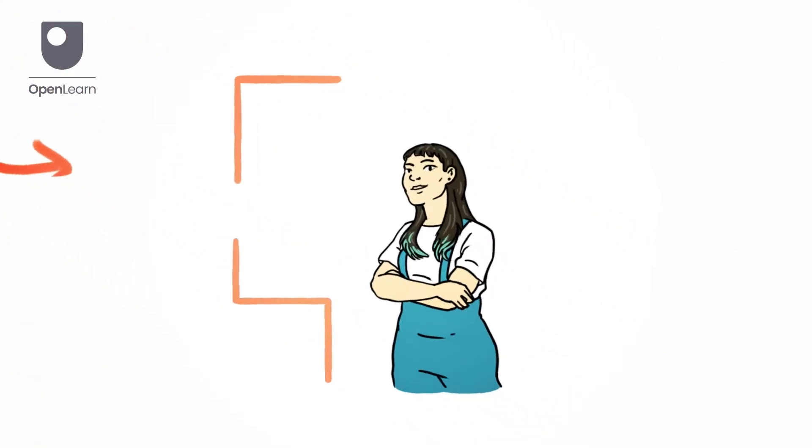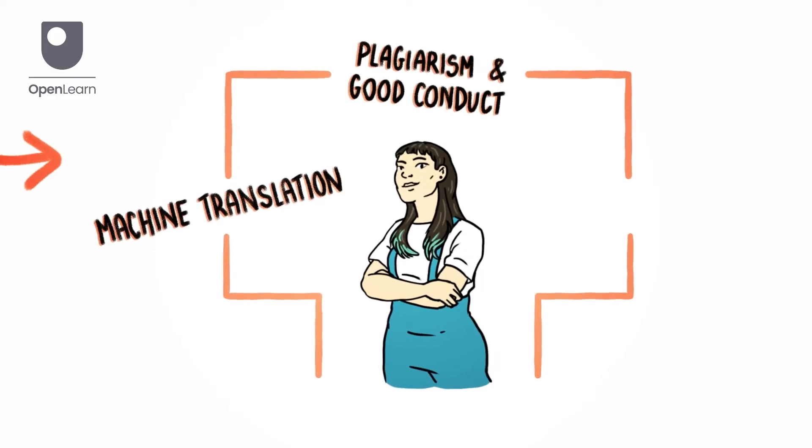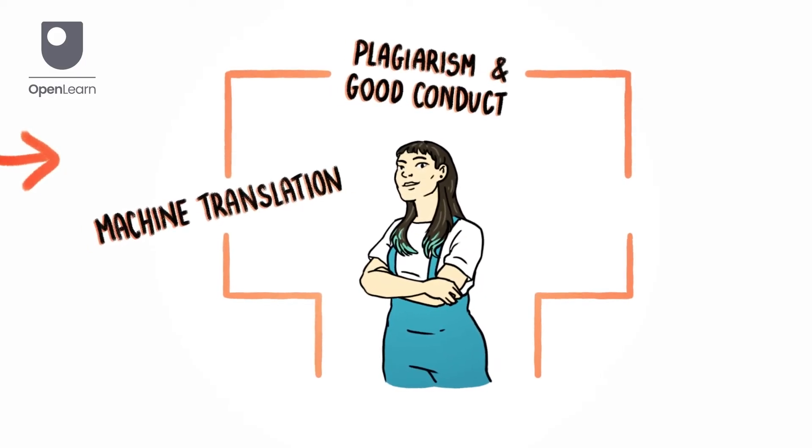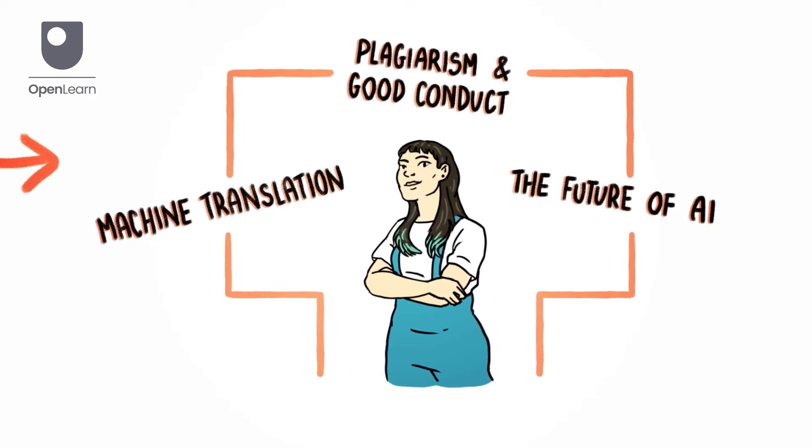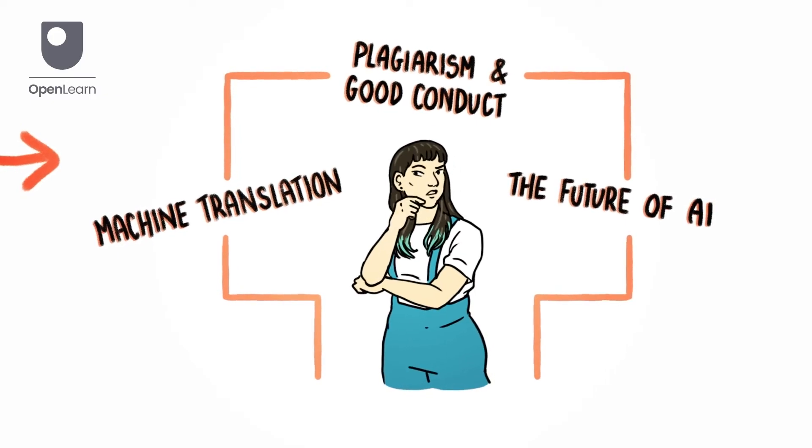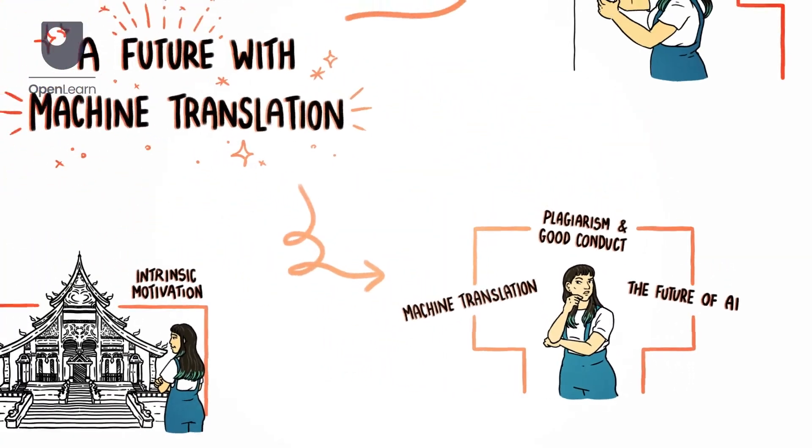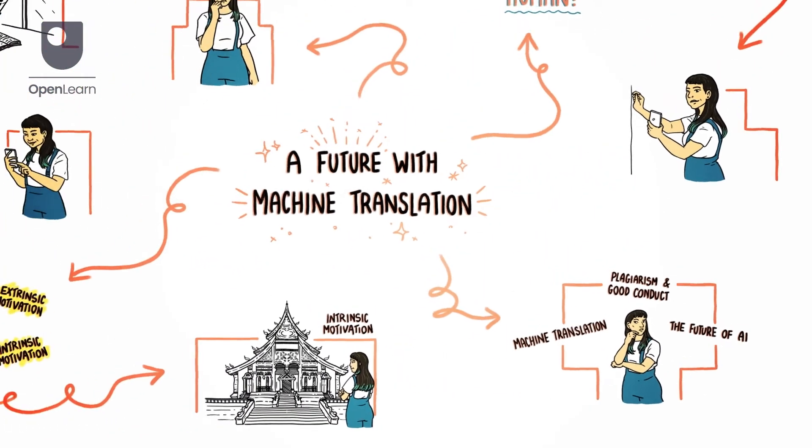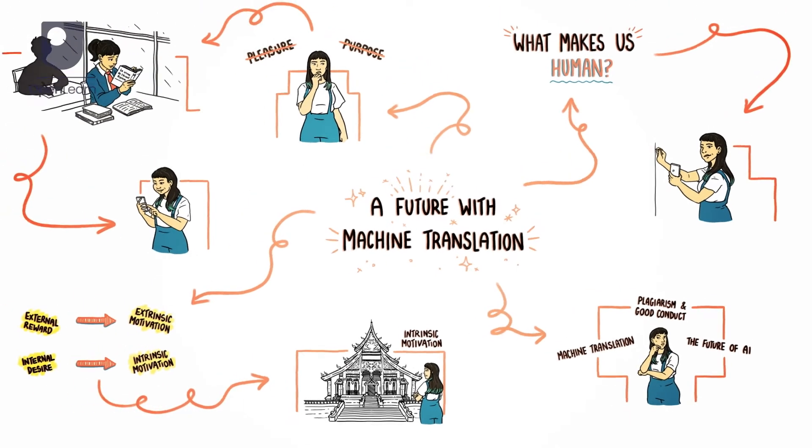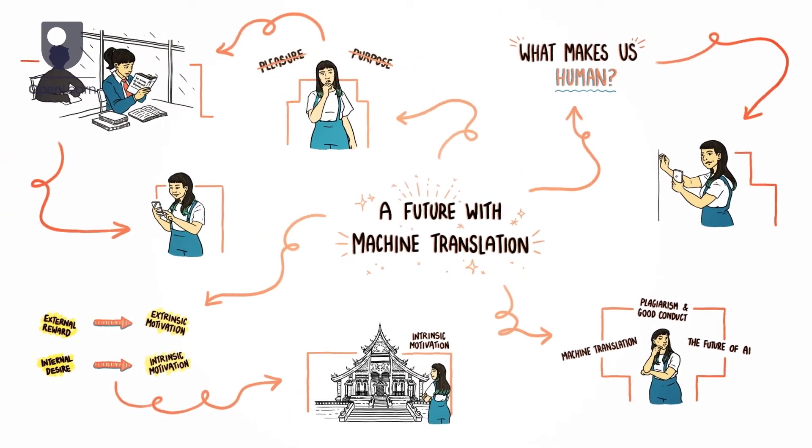This course has taught you about machine translation, about plagiarism and good academic conduct, and about the future of artificial intelligence. Now it's time to reflect, to consider why you're learning a language in the first place, so you can make informed decisions about how you use machine translation and AI tools.